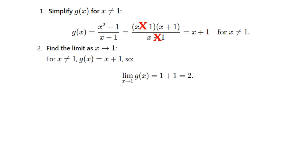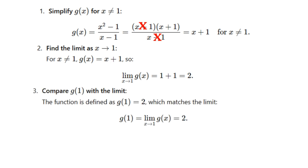When x is not equal to 1, we can find the limit of g(x) as x tends to 1, which gives us 1 + 1 = 2. So the limit exists and equals 2. We should not simply view the function as having a point of discontinuity at x equals 1 — the limit actually exists and equals 2.